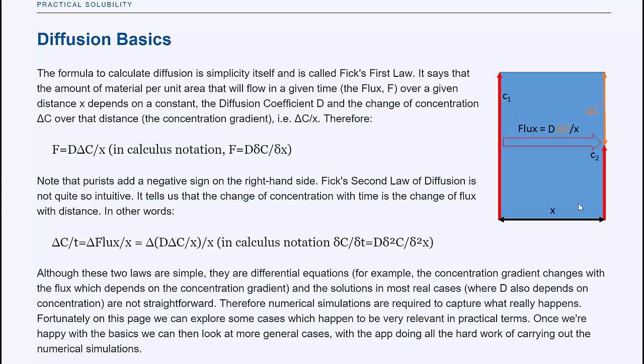But we're not often interested in the amount of stuff, we're often interested in the concentration of stuff. And the change of concentration with time comes from Fick's second law of diffusion, which says delta c with time, change of concentration with time, depends on the change of the flux over distance. And in calculus notation, it's d2c by dx squared.